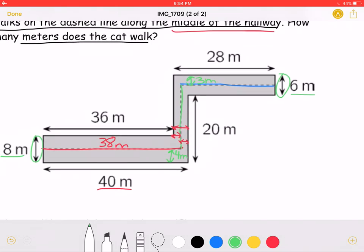So to find the length of the green part, we must take 20 plus 6 meters to get this entire length, and then subtract from that. So 26 minus the 4 from here, plus the 3 from up here, we would get a total of 19. So this green portion is 19 meters.